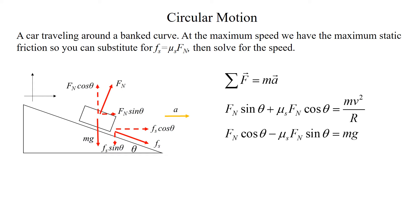If we are at the maximum speed without skidding, the static friction is at its maximum value, and we can substitute mu_s · F_n for the static friction force in our equations — this is the condition of being on the verge of skidding. However, in normal conditions the static friction is not at its maximum value, so we must be careful depending on what the problem asks. We can use these two equations to find the maximum speed around the curve without skidding.